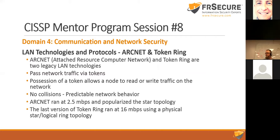Token Ring and ARCnet both operate as token passing networks. Token ring is a logical ring and physical star — things are physically connected to a central location, but the packet goes around the network in a ring: in one port, out the next port. Your system has to possess the token in order to send network traffic. No collisions, predictable network behavior — you can calculate how long it takes the token to get around the network. ARCnet ran at 2.5 megabits per second. Token ring ran at 4 and 16 megabits per second. Physical star, logical ring topology.